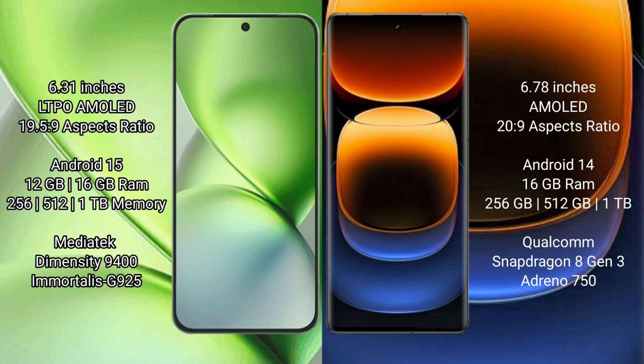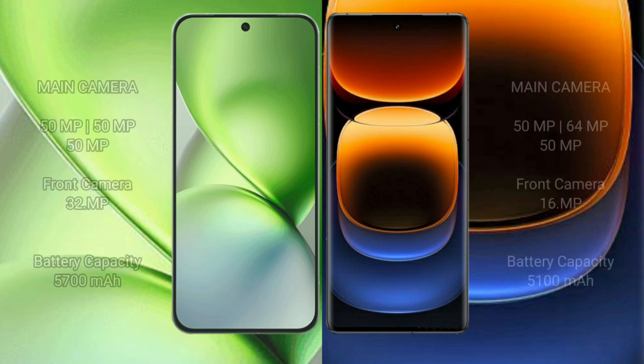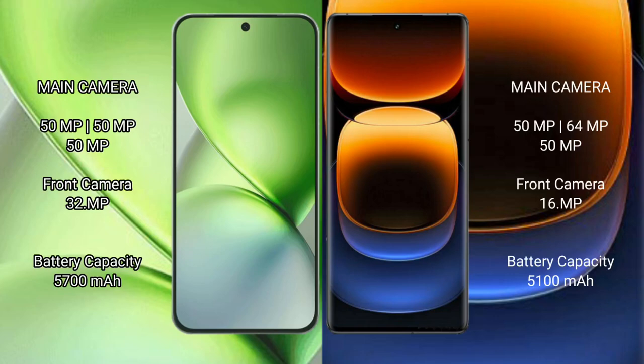The Vivo X200 Pro Mini has a rear triple camera setup of 50MP plus 50MP plus 50MP, and a 32MP front camera. The Vivo iQOO 12 Pro has a rear triple camera setup of 50MP plus 64MP plus 50MP, and a 60MP front camera.